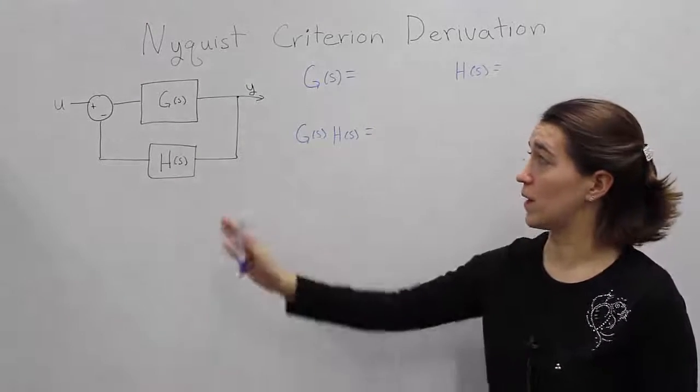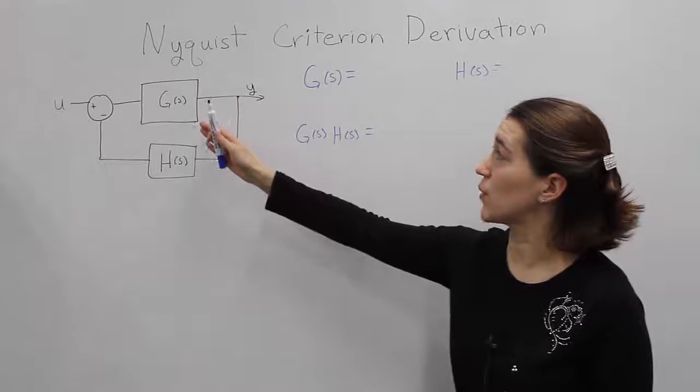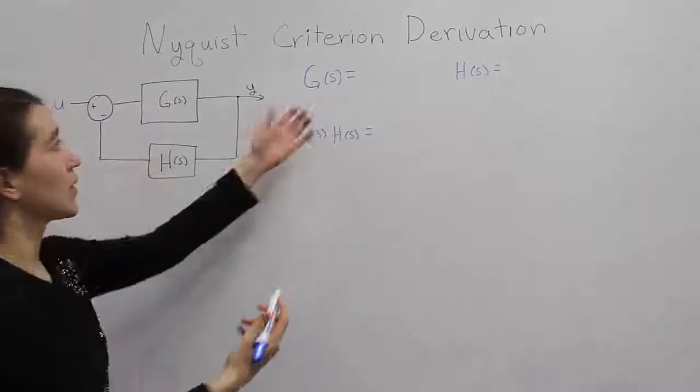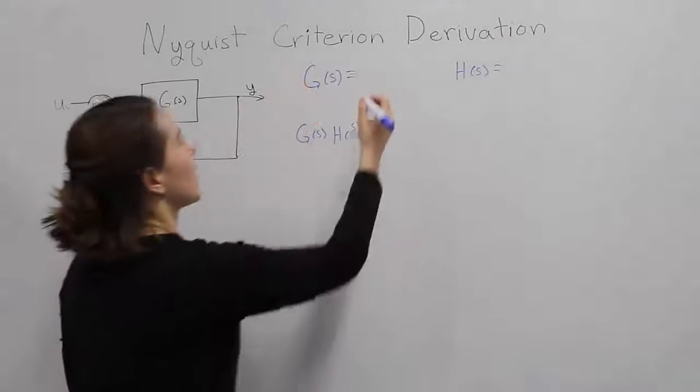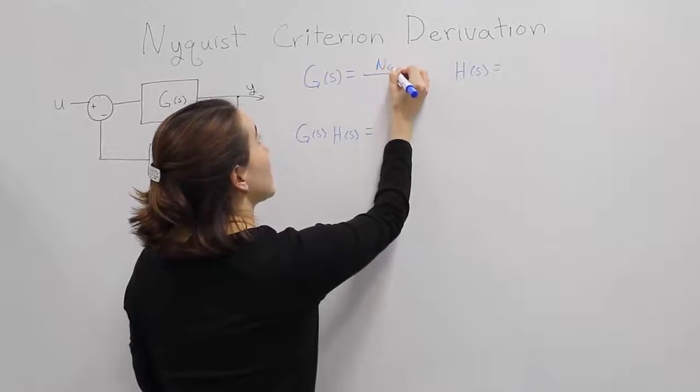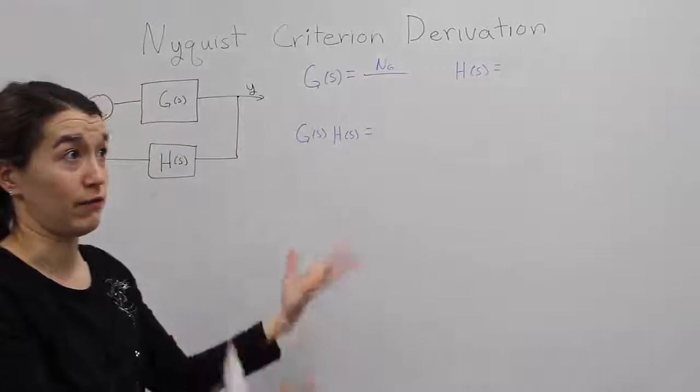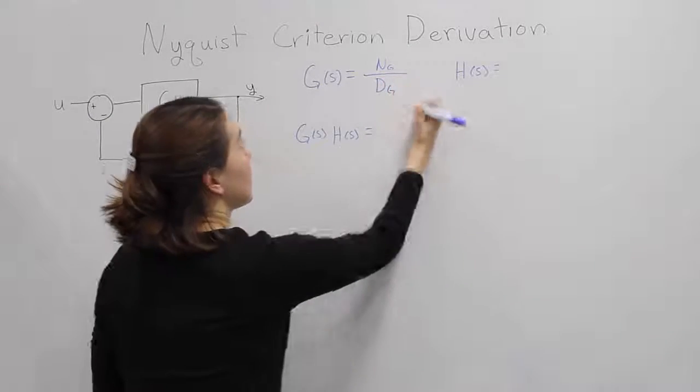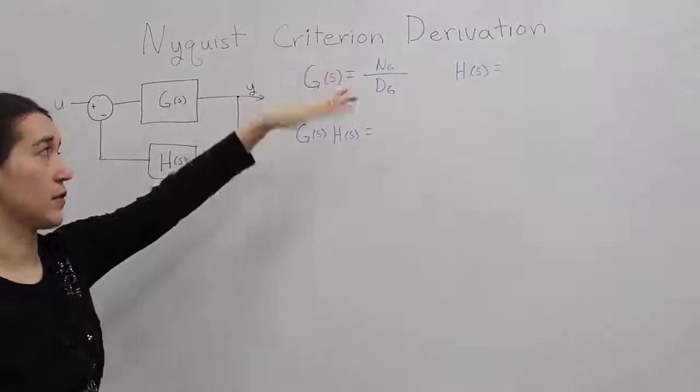In our basic system, in closed-loop feedback like this, we would have a G system, a transfer function for that, and we're going to define some terms here. We're going to define this generally as some numerator, n of G, which would be some function of s, some polynomial, and then the denominator of G. So some numerator over some denominator.